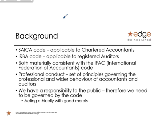The code itself is broken up into three parts: Part A, Part B, and Part C. Part A is applicable to everyone. Part B is applicable to Registered Auditors. Part C is applicable to Chartered Accountants. But remember, if you're a Registered Auditor, you're also a Chartered Accountant. So you learn one code, you've learned three.